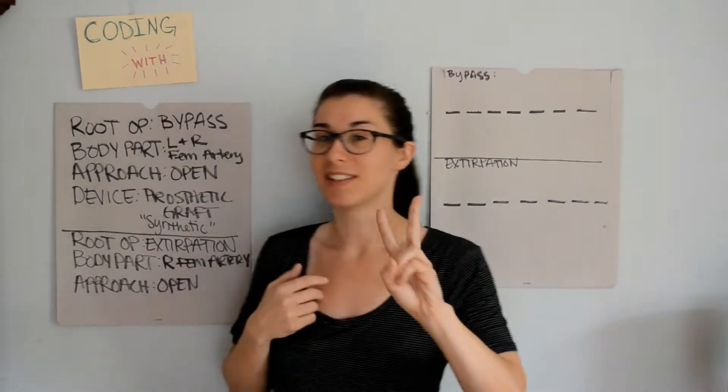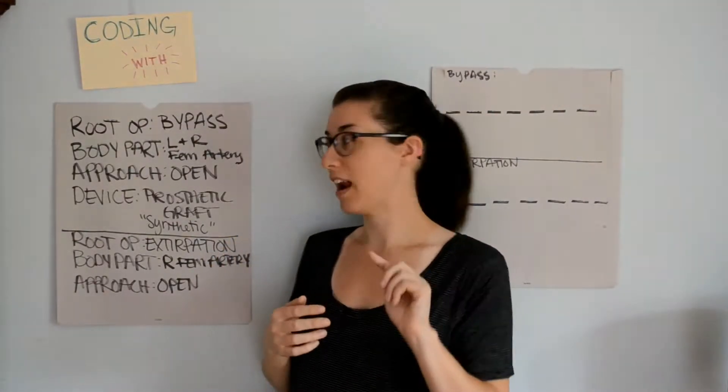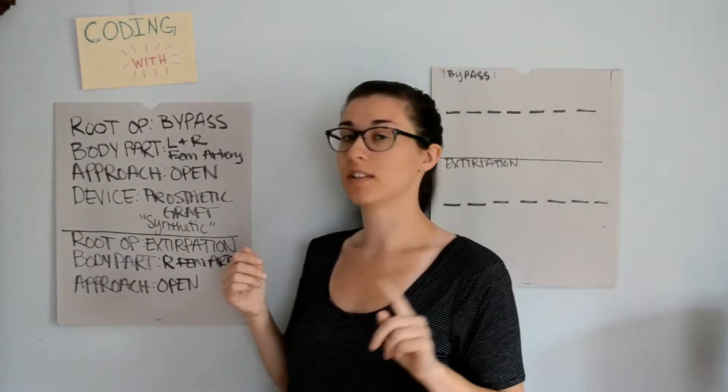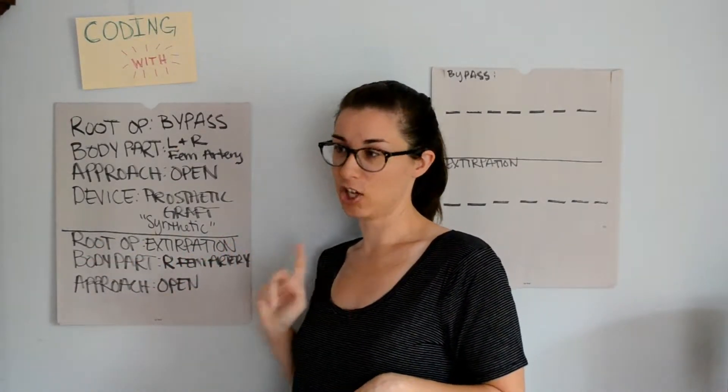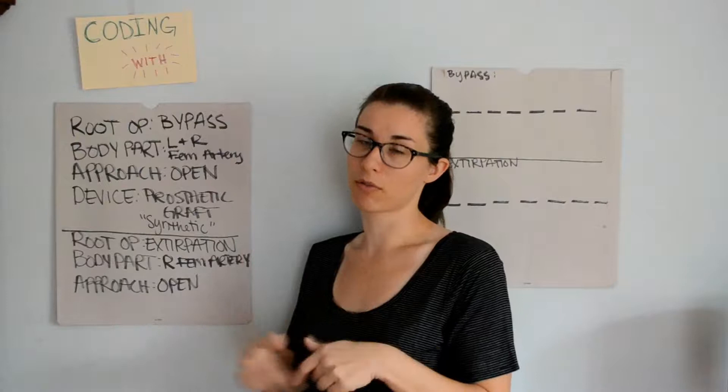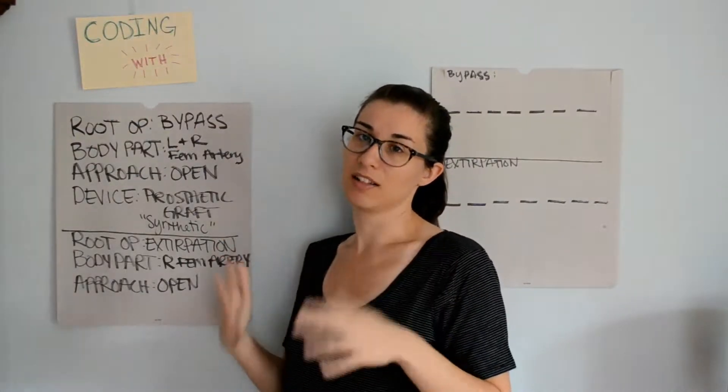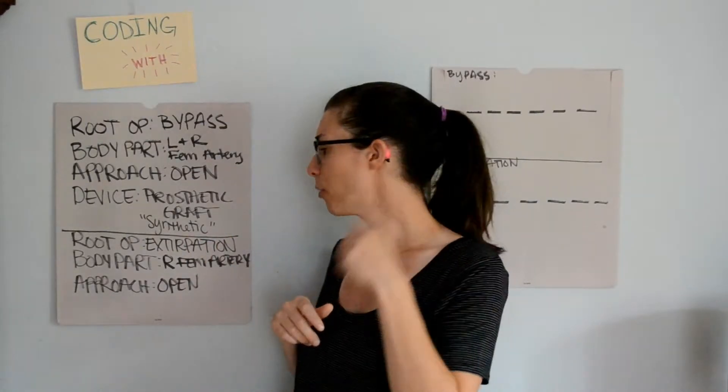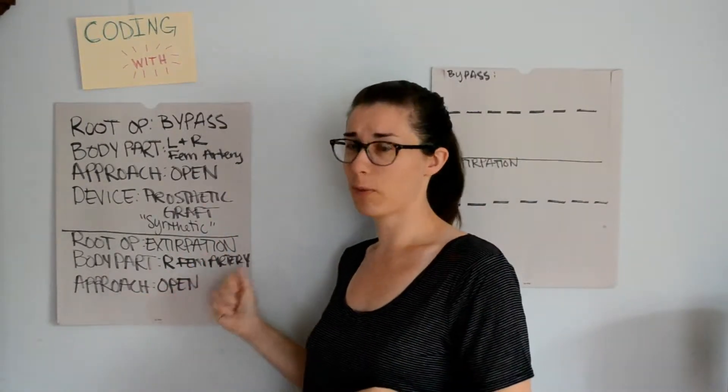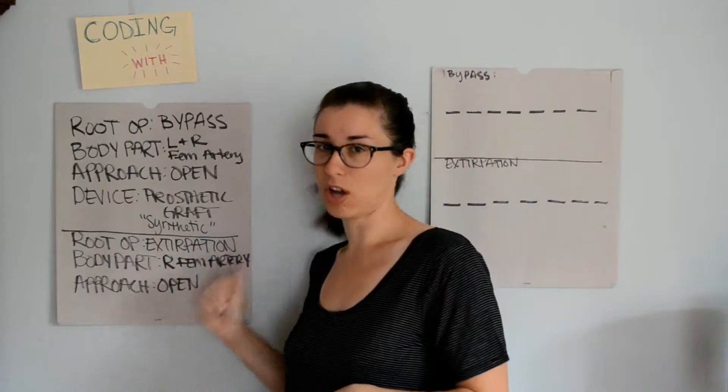We also found that there was a second procedure that happened near the end, which was a thrombectomy. So, the root operation for that is extirpation, because removing a thrombus, blood clot, or a byproduct of a physiological process, we use extirpation. The body part, we found that was on the right femoral artery, and the approach was open.